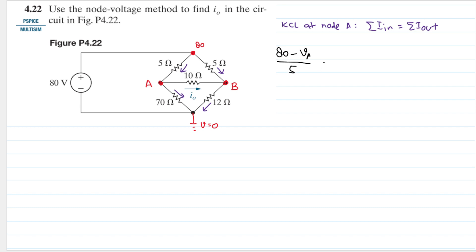That current is 80 minus Va divided by 5. The other currents are going out, so we have Va minus Vb divided by 10, plus Va divided by 70.